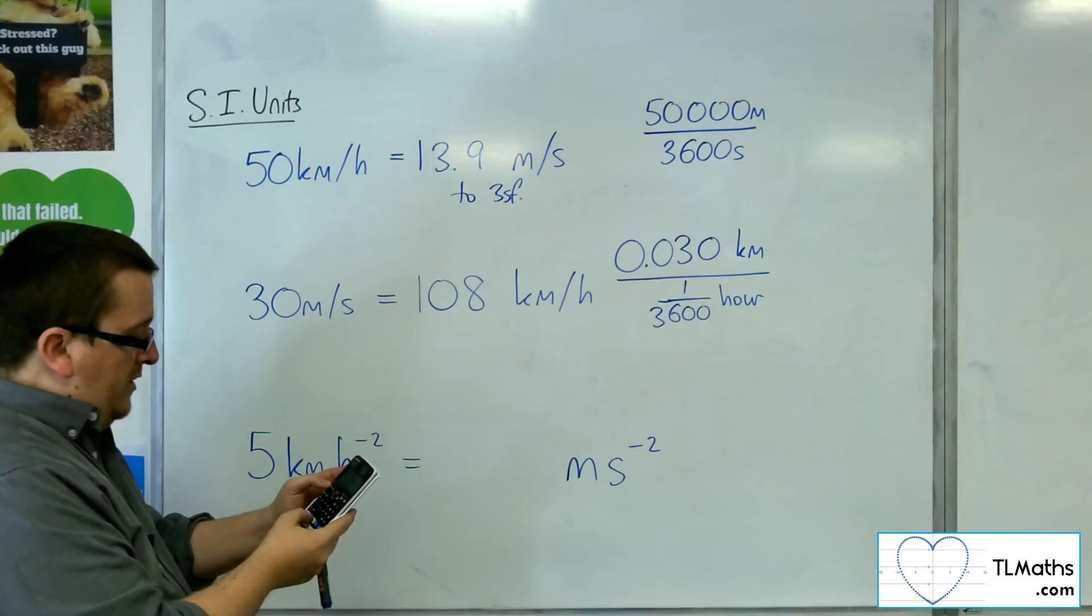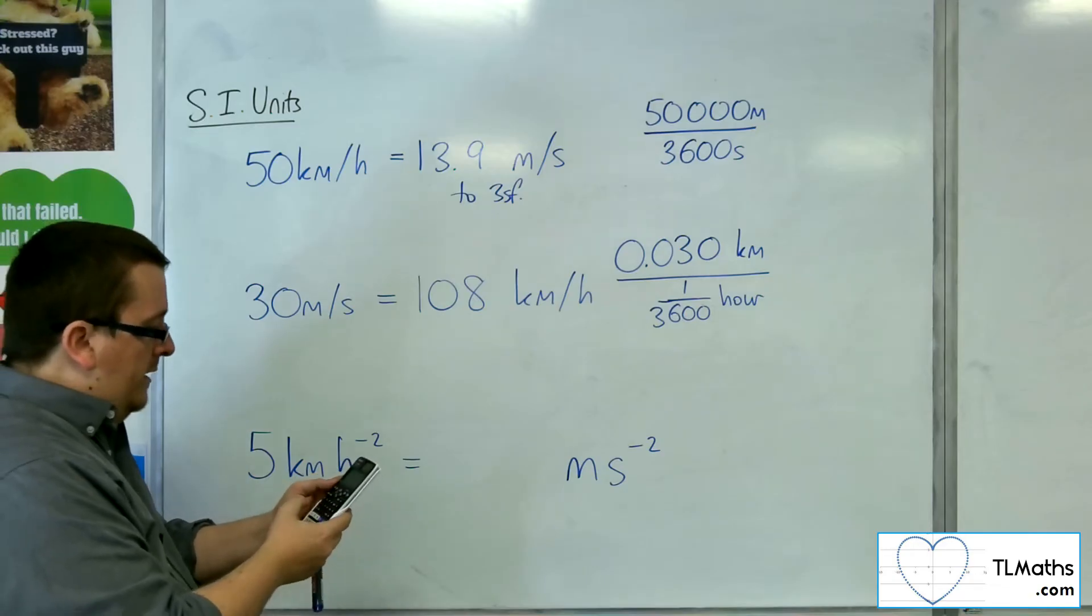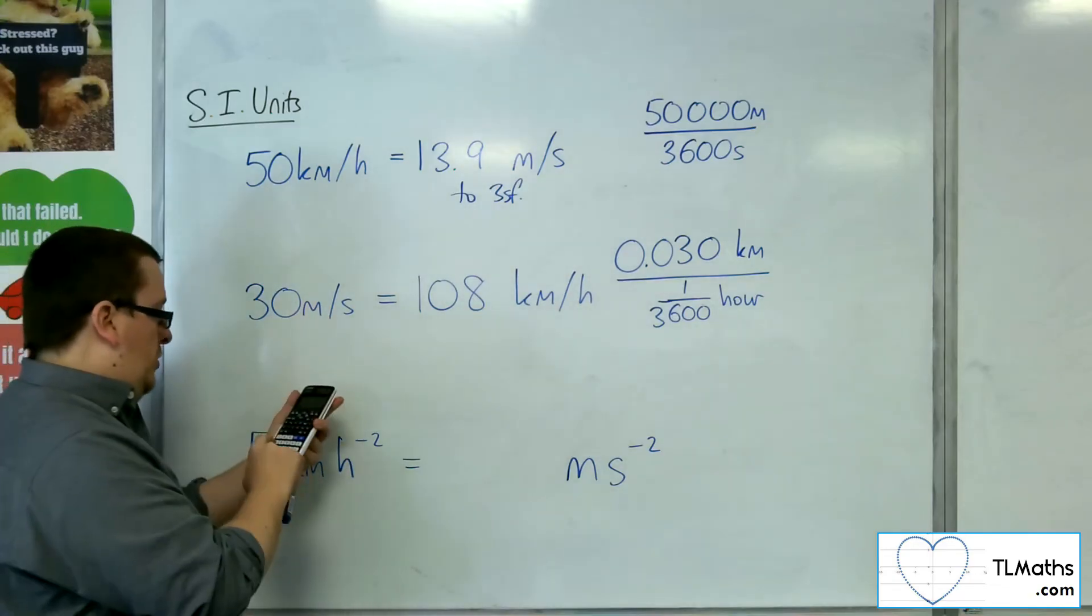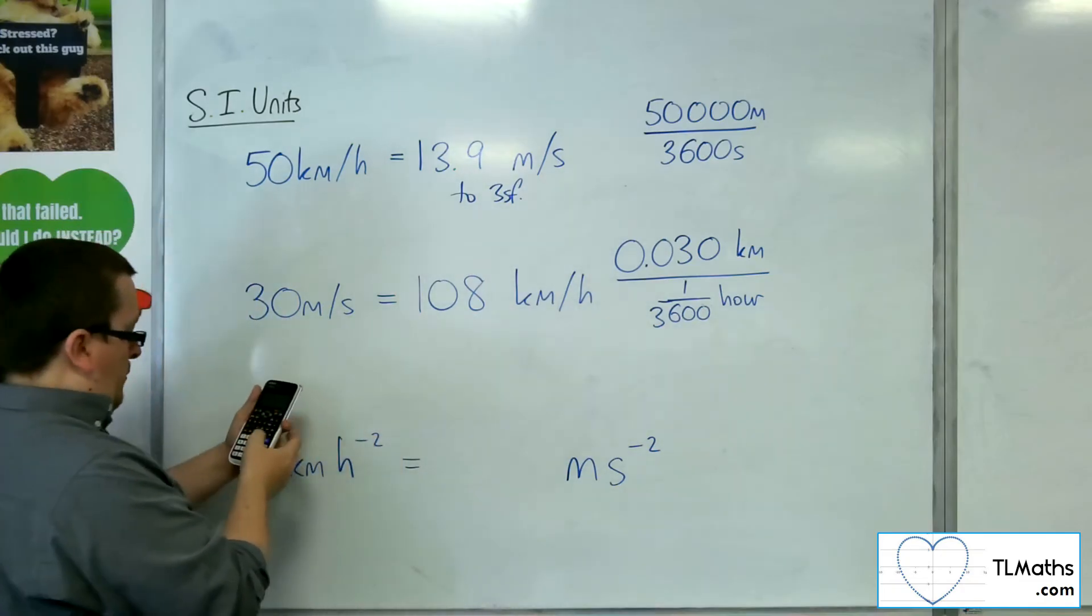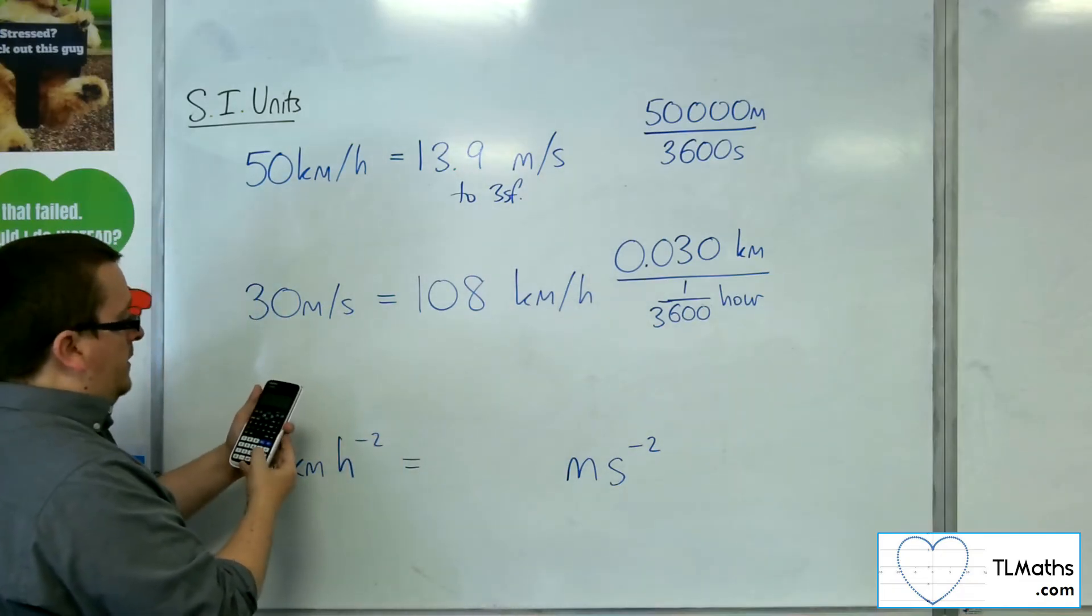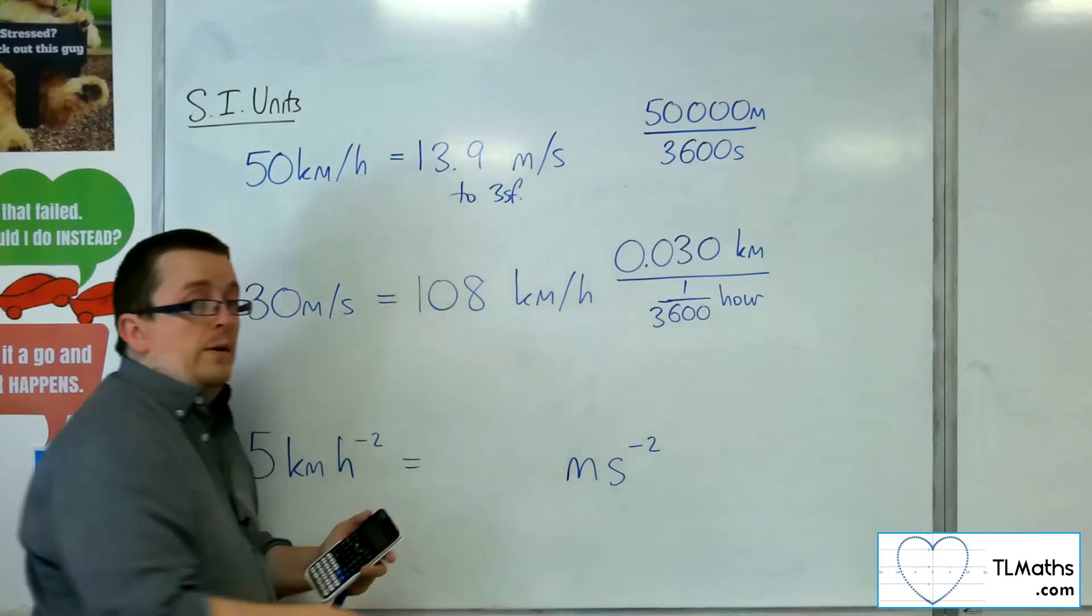Now, if we go back and we go into conversion again to velocity, let's try it for the other one. So for number 2, metres per second to kilometres per hour. So if we put 30 metres per second, we get the 108 kilometres per hour.